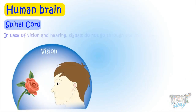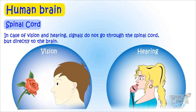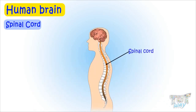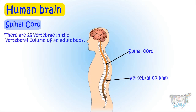Almost all parts of the body send signals to the brain through the spinal cord. However, in the case of vision and hearing, signals do not go through the spinal cord — they go directly to the brain. That's why people who are completely paralyzed are still able to see and hear. The spinal cord lies inside the backbone, or vertebral column, which is made up of small bones called vertebrae, and there are 26 vertebrae.